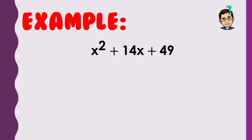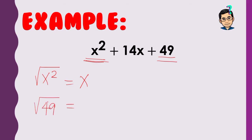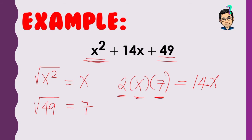Example: x² + 14x + 49. Check the first term: square root of x² is x. The last term: square root of 49 is 7. Now check the middle term — twice the product of x and 7: 2 times x times 7 is 14x. We get 14x, which matches the middle term. Therefore, this is a perfect square trinomial.